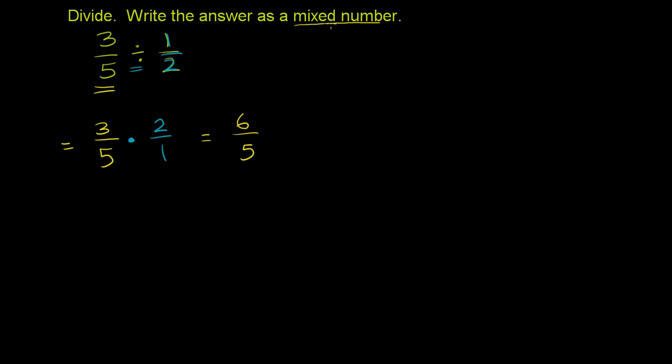Now they want us to write it as a mixed number. So we divide the 5 into the 6. Figure out how many times it goes. That'll be the whole number part of the mixed number. And then whatever's left over will be the remaining numerator over 5. So what we'll do is take 5 into 6. 5 goes into 6 one time. 1 times 5 is 5. Subtract, you have a remainder of 1.